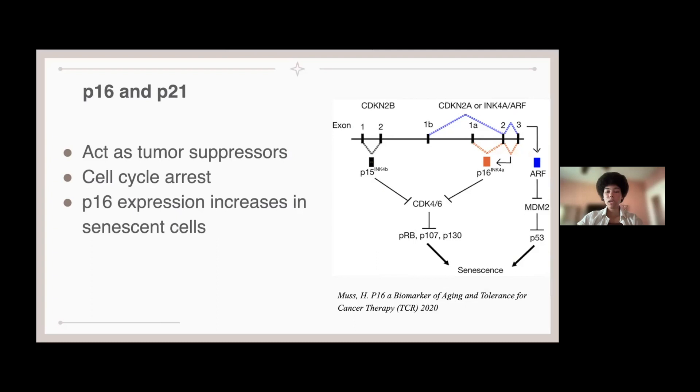And so the INK4 locus acts as a senescence sensor in which disruption of the polycomb repressive complexes that control the methylation of a protein activates P16 and therefore induces senescence.